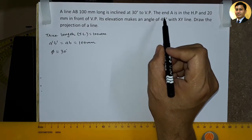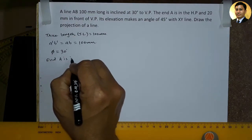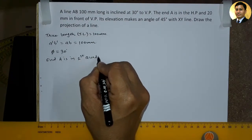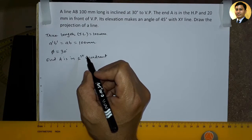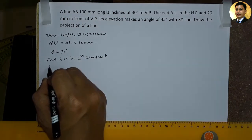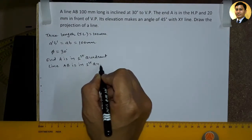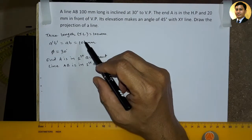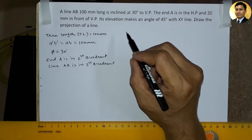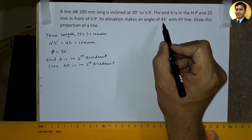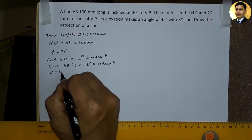So यहाँ पर हम line के end A को first quadrant में consider करेंगे. So end A is in first quadrant. यहाँ पर दूसरी कोई condition हमें दी नहीं गई है, इस पूरी line को हम first quadrant में consider करेंगे. So line AB is in first quadrant. यहाँ पर यह जो line AB है उसे elevation से देखने से वो XY line से 45 degree का angle बना रही है. यह जो angle है वो है alpha. So alpha is equal to 45 degree.